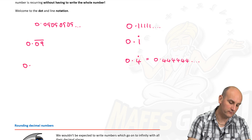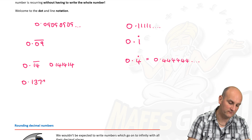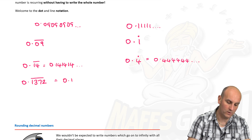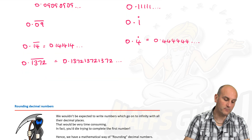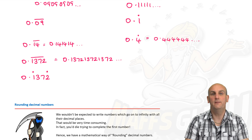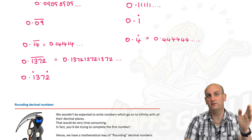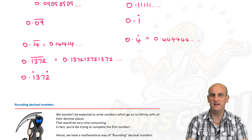If I had 0.141414..., I'd write 0.14 with a line over it. It doesn't have to be just two numbers — 0.1372 with a line means 0.137213721372 and so on. Alternatively, we can use a double-dot: one dot at the start and one at the end of the repeating block. I personally prefer the line notation — it looks nicer and less confusing.